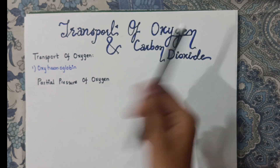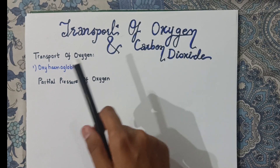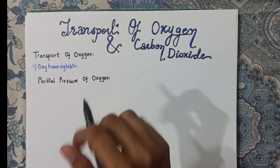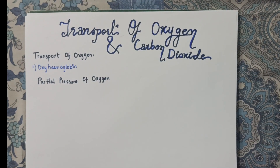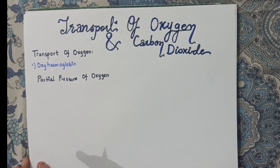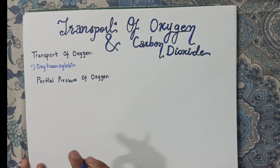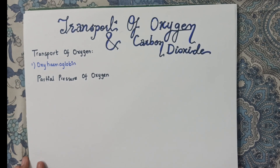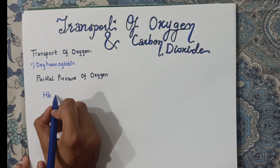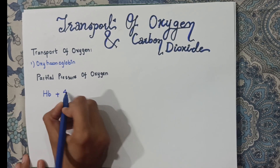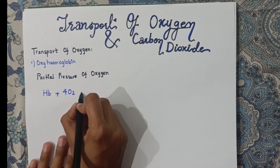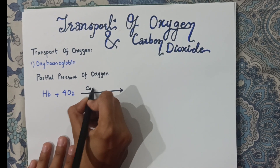Then when we go to tissues, the partial pressure of oxygen in blood is more as compared to the tissues, so blood will move the oxygen to our tissues. When oxygen enters our blood, it reacts with hemoglobin in the presence of the enzyme carbonic anhydrase. A hemoglobin molecule combines with 4 oxygen molecules to form oxyhemoglobin.